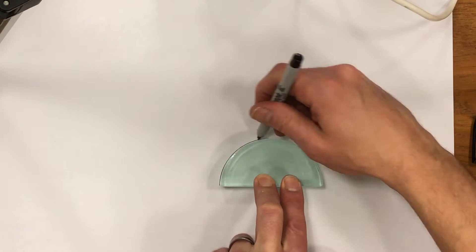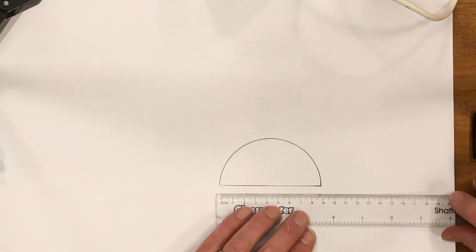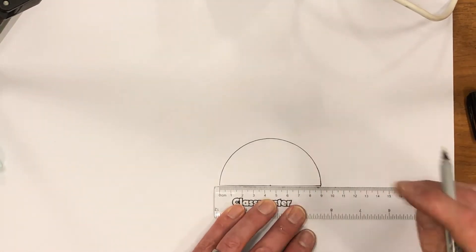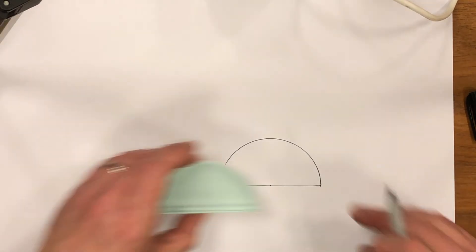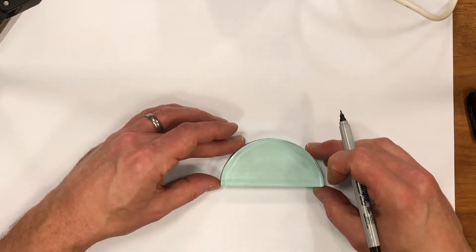I draw around the glass block and then use a ruler to measure halfway along the flat side. This is where I'm going to aim the ray for the whole of the experiment.